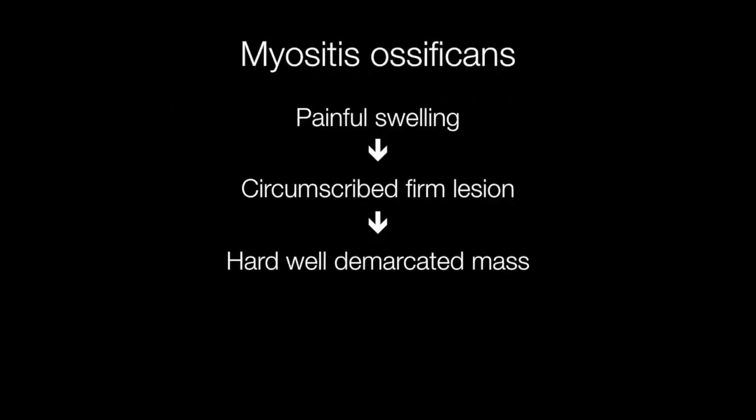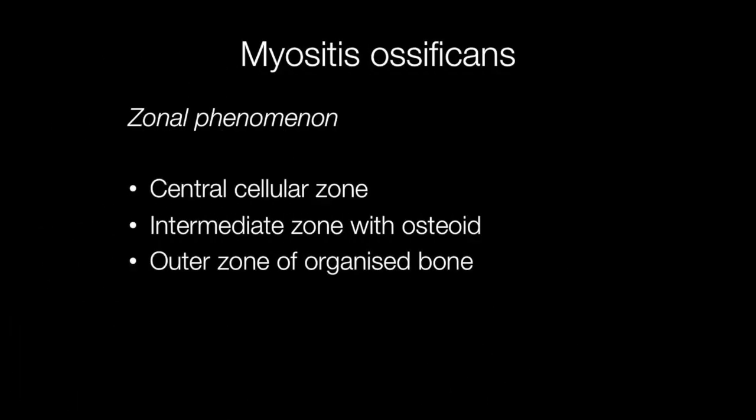Myositis ossificans presents as a painful swelling, which then becomes a circumscribed firm lesion forming a hard well-demarcated mass. The lesions are characterised by the zonal phenomenon, where there is a central cellular zone composed of fibroblasts, an intermediate zone with osteoid, and an outer zone of organised bone.